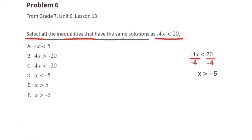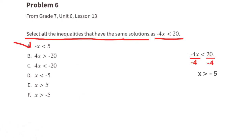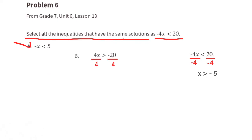Option a: negative x is less than 5. Divide both sides by negative 1 and switch the sign — x is greater than negative 5. This is equivalent to the original. Option b: 4x is greater than negative 20. Divide both sides by 4: x is greater than negative 5. Also equivalent to the original.